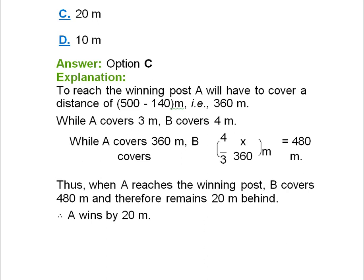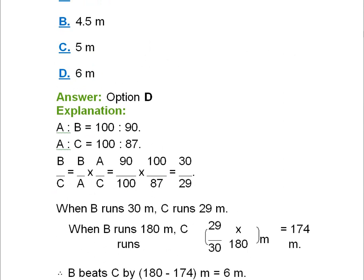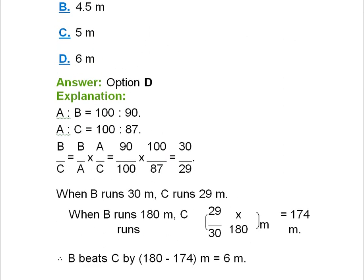Question 4: In a 100-meter race, A beats B by 10 meters and C by 13 meters. In a race of 180 meters, by how much will B beat C? A:B ratio is 100:90, and A:C ratio is 100:87. B:C equals (B/A) × (A/C) = (90/100) × (100/87) = 90/87 = 30/29. When B runs 180 meters, C runs (29/30) × 180, which is 174 meters. So B beats C by 180 minus 174, which is 6 meters — option B.